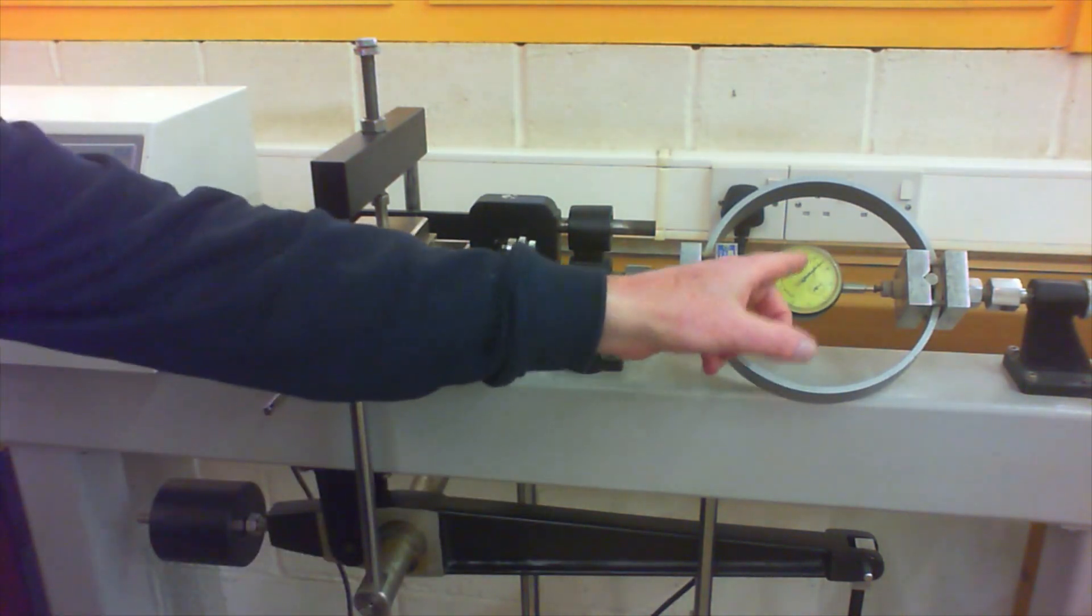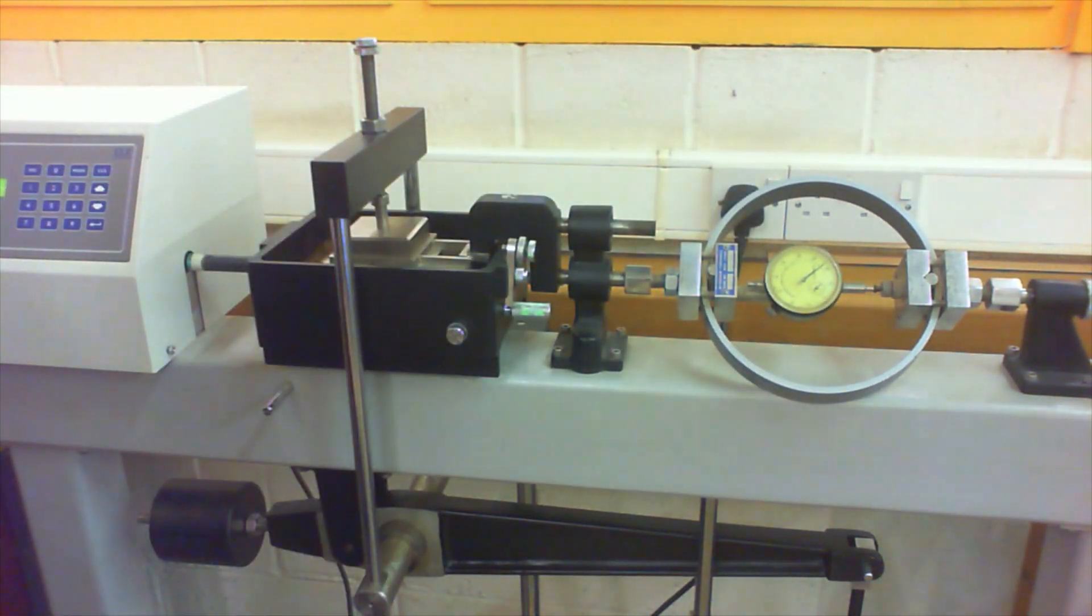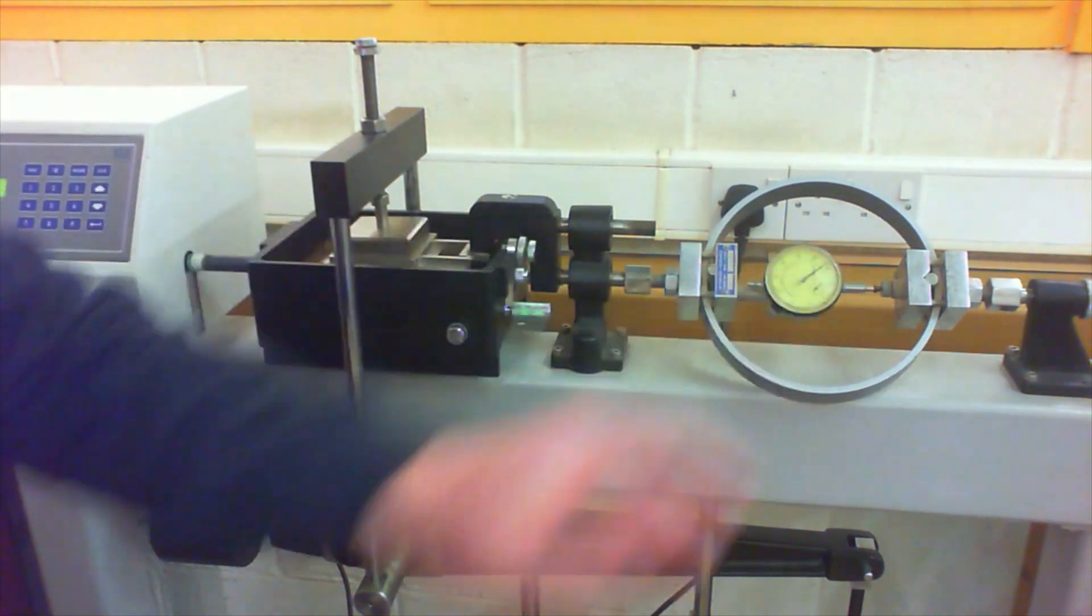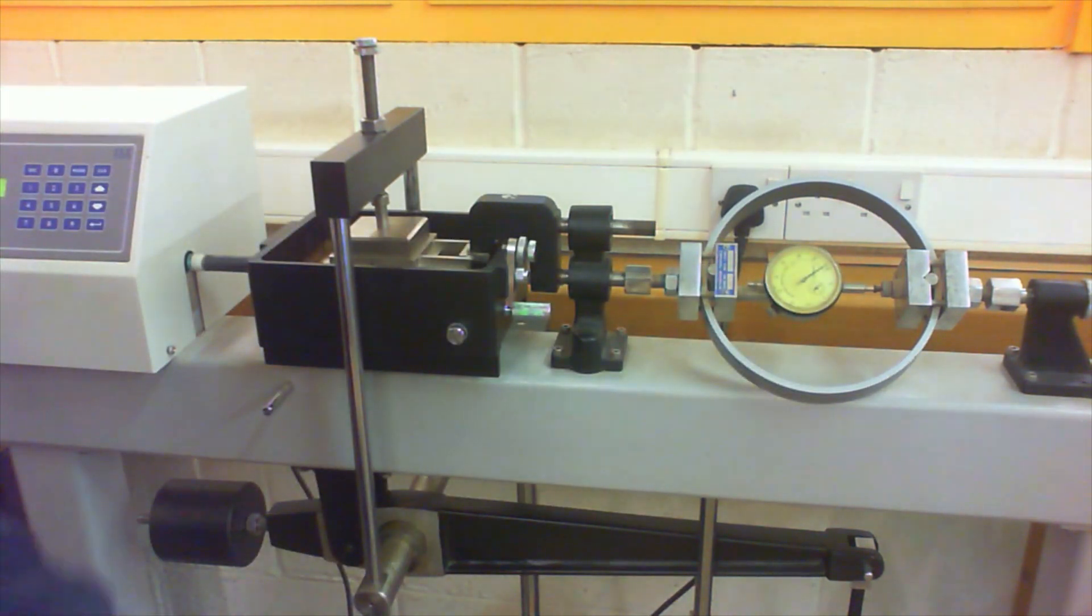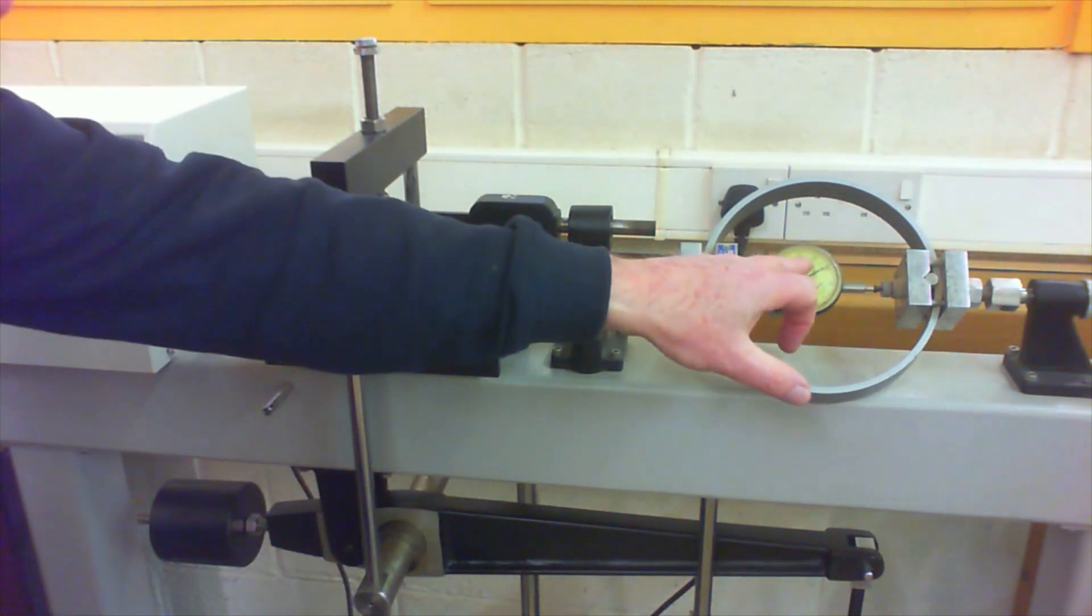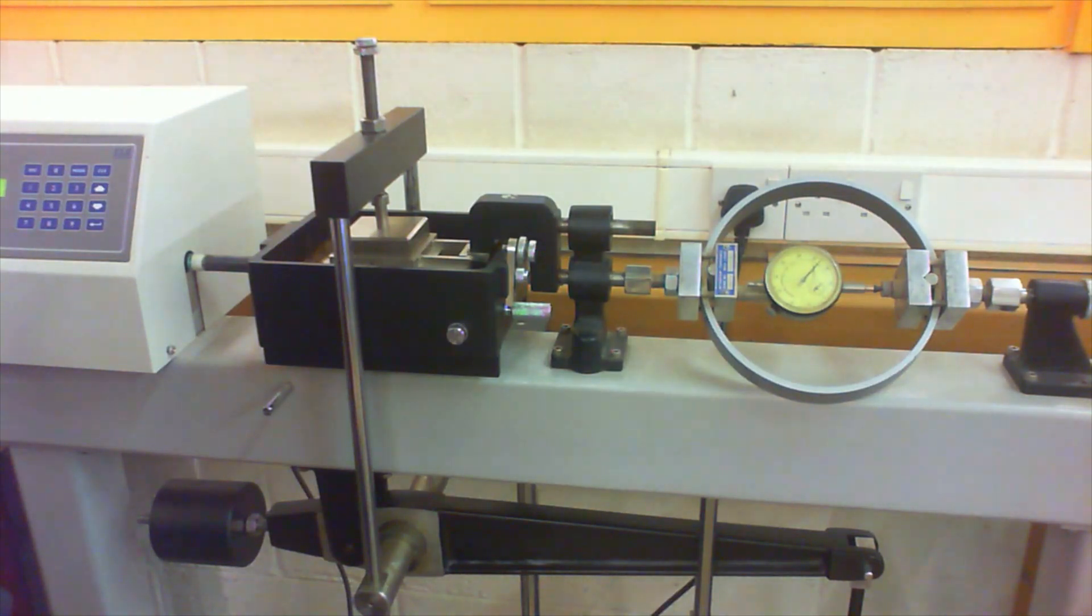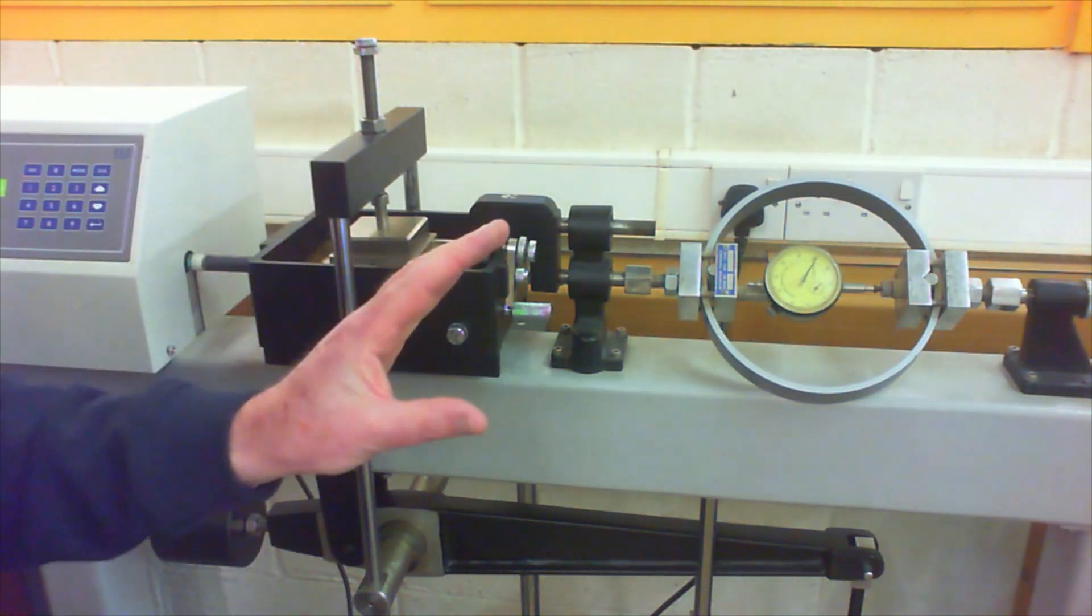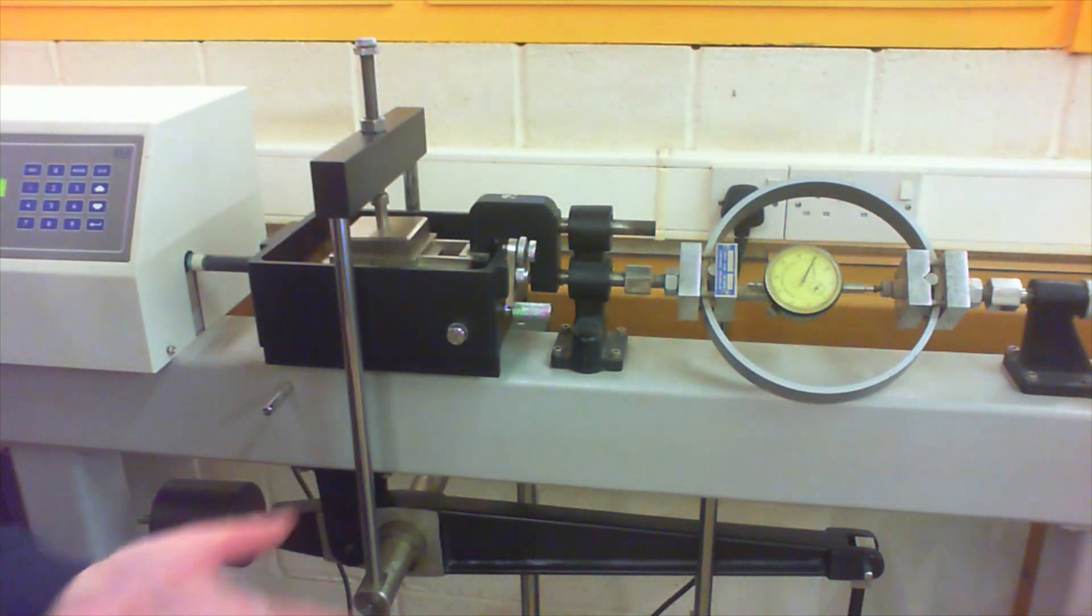But you can see there, it stopped rapidly increasing, it's reached a kind of a peak. That may creep up very slightly if I left it long enough, but I would record that failure at 270 divisions, and record that as the failure stress, the horizontal stress at failure.